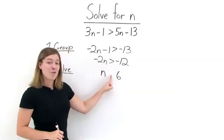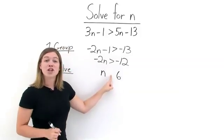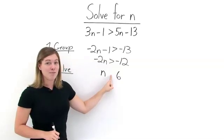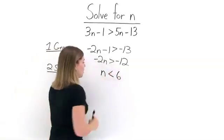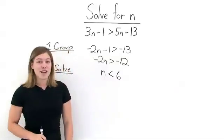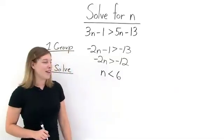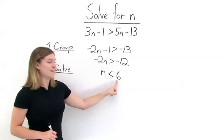But what about our inequality? Well, we just divided by a negative number. That means we need to flip over our inequality symbol in order to preserve the inequality. Now, we have our answer of N is less than 6.